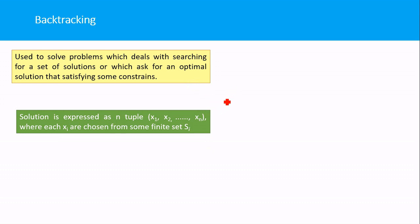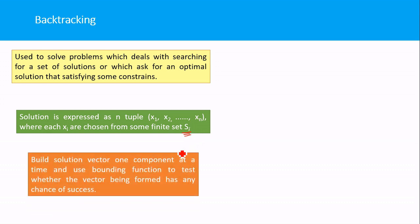Solutions in backtracking are expressed as an n-tuple: x1, x2, ... xn, where each x is chosen from a finite set S. It builds a solution vector one component at a time and uses a bounding function to test whether the vector being formed has a chance of success. We first add x1, then x2, and each time we check whether adding this value will lead to a solution.